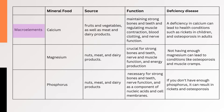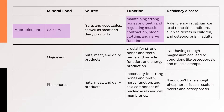Macro-elements. 1. Calcium — Calcium is an important nutrient that can be found in a variety of foods, including most fruits and vegetables, as well as meat and dairy products. It plays a crucial role in maintaining strong bones and teeth and regulating muscle contraction, blood clotting, and nerve function. A deficiency in calcium can lead to several health conditions such as rickets in children and osteoporosis in adults.